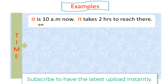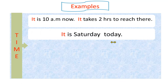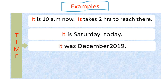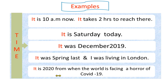More time examples: 'It takes two hours to reach there.' Another example: 'It is Saturday today.' We cannot say 'Today is Saturday' with introductory 'it'; instead, we say 'It is Saturday today.' Another example: 'It was December 2019.' And: 'It was spring last year and I was living in London.' Also: 'It is 2020 — that means 2020, from when the world was facing the horror of COVID-19.'